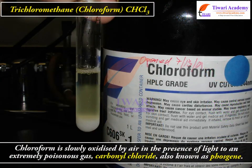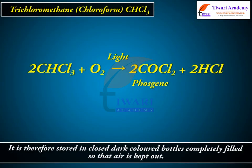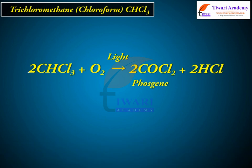Chloroform is slowly oxidised by air in the presence of light to an extremely poisonous gas, carbonyl chloride, also known as phosgene. It is therefore stored in closed dark-coloured bottles completely filled so that air is kept out. The reaction is: 2CHCl3 + O2 (in the presence of light) → 2COCl2 (phosgene) + 2HCl.